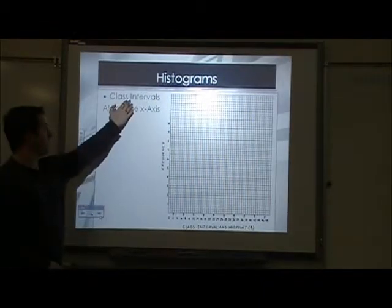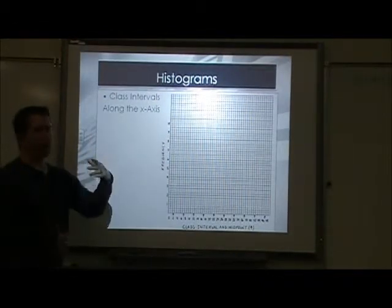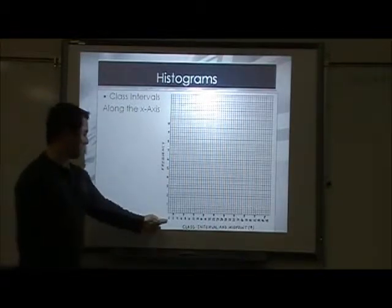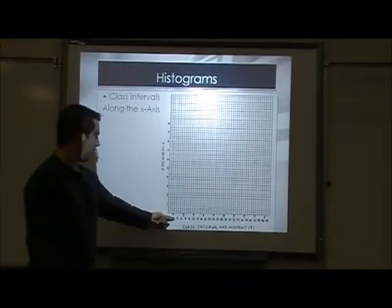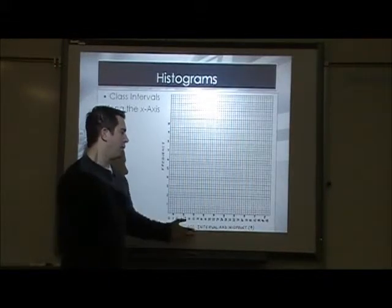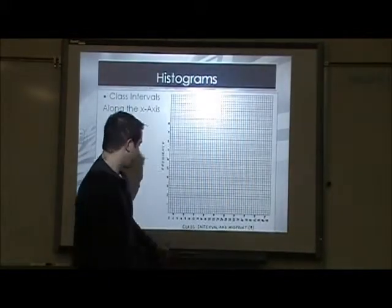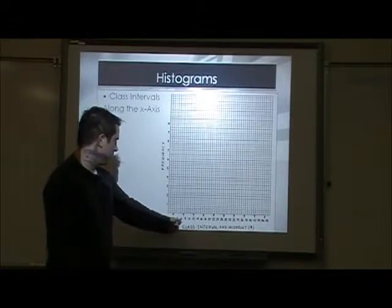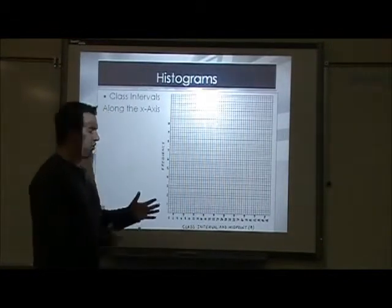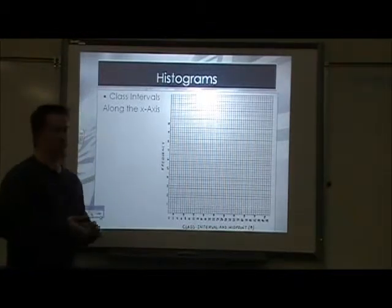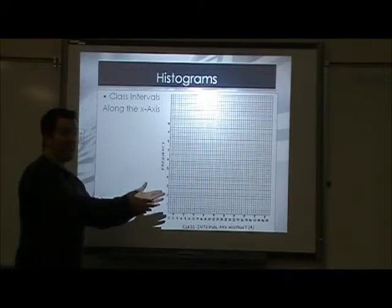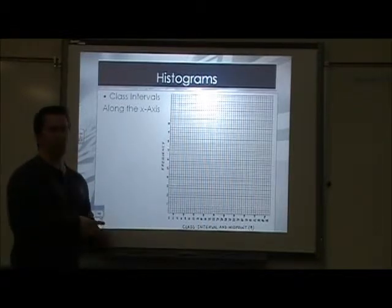Here we go — we've got a histogram we're going to start drawing. We're going to start with class intervals along the x-axis. You can see down here it goes 0, 2, 4, 6, 8, 10, 12, all the way up to 48. In the middle, on the 2, on the 7, on the 12, on the 17, there are little arrows. We're going to talk about those midpoints — midpoints in every single one of your distributions and what they are.